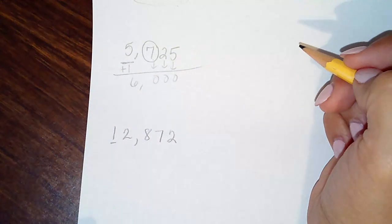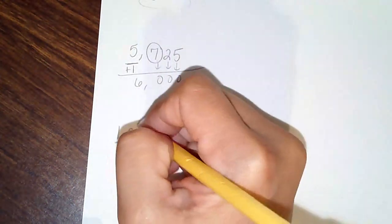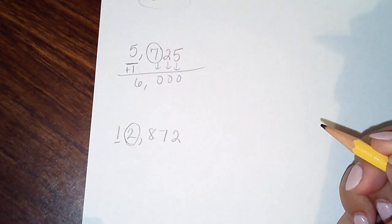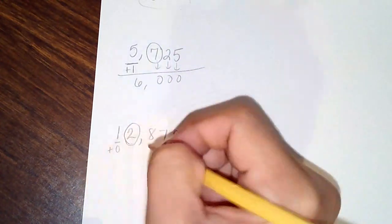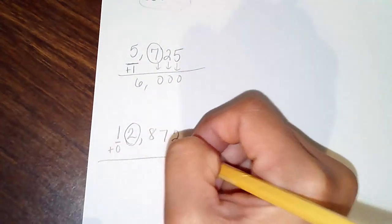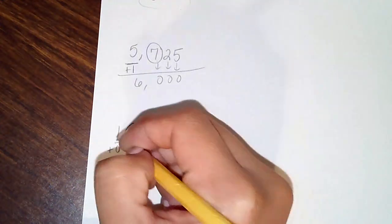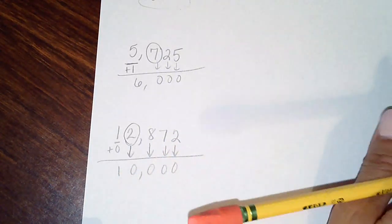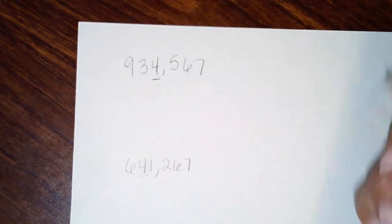The next one: they want you to round to the nearest ten thousands. Your two is your boss. Two is in the zero to four range, so that's a baby boss — it cannot tell the underlined digit what to do, so you add zero. All the digits to the right, including the boss, turn to zeros. Then place your comma appropriately.